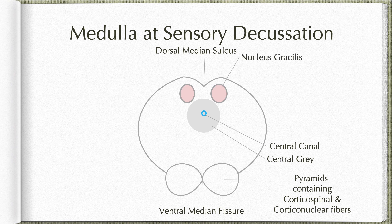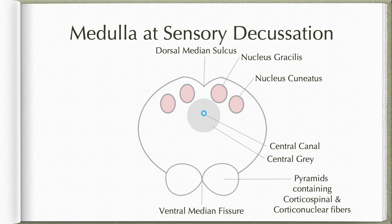On the dorsal aspect, slightly removed from the central gray matter on either side of the midline, we find nucleus gracilis. More laterally, we find the nucleus cuneatus. Both these nuclei will have become much larger compared to the nuclei at the level of pyramidal decussation. This is where they result in the formation of the gracile and cuneate tubercles on the dorsal aspect of the medulla.